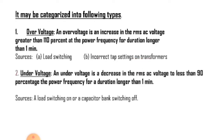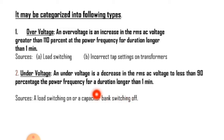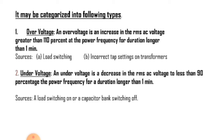Regarding under voltages, it is defined as a decrease in the RMS AC voltage to less than 90 percent at the power frequency for a duration longer than one minute. Under voltages are the result of switching events that are the opposite of the events that cause over voltages. A load switching on or a capacitor bank switching off can cause an under voltage until voltage regulation equipment on the system can bring the voltage back to within tolerance. Overloaded circuits can also result in under voltages.